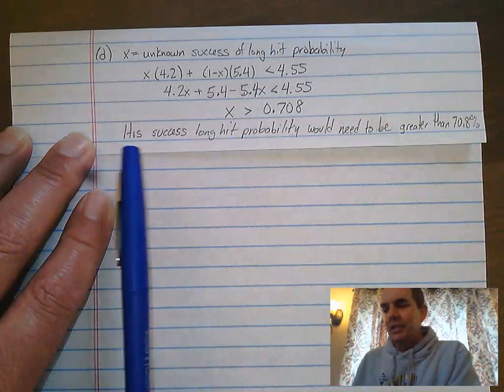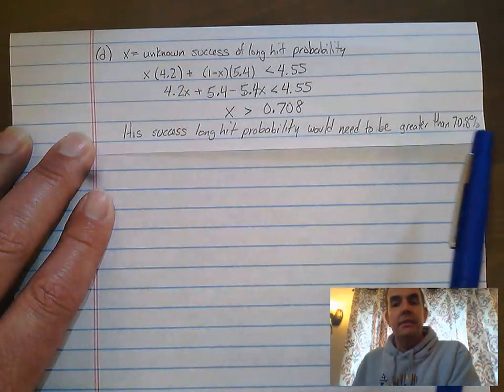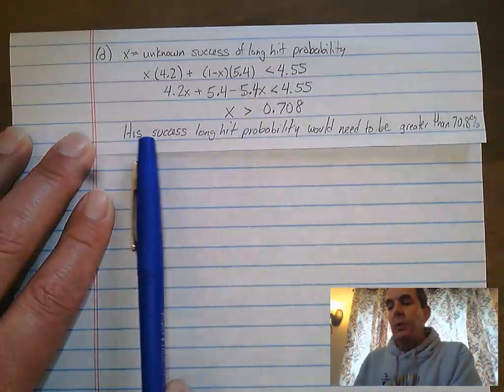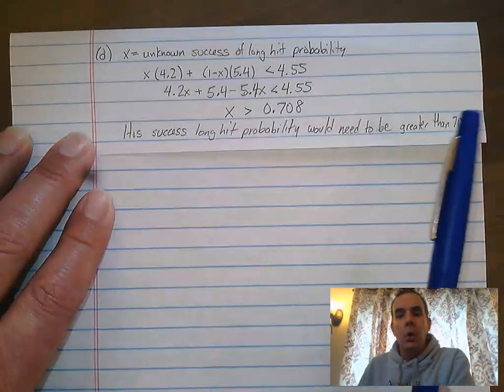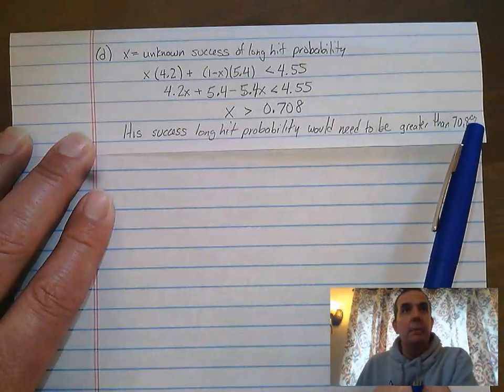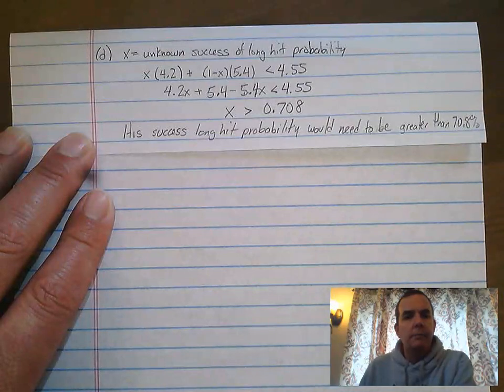You need to say in the sentence, his success long hit probability would need to be greater than 70.8%. So he would need to be sure that he could hit the ball over the water more than 70.8% of the time in order to consider going with a long hit.